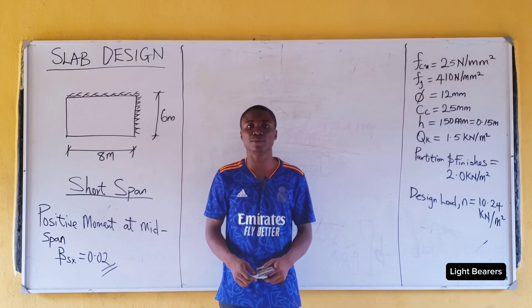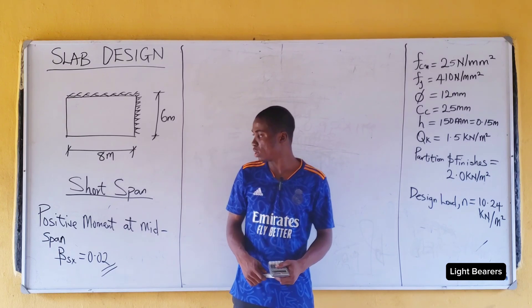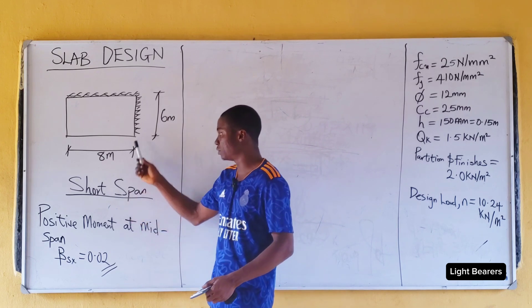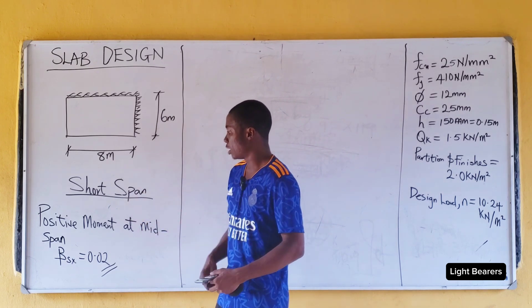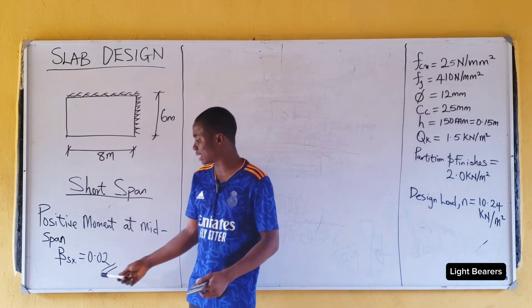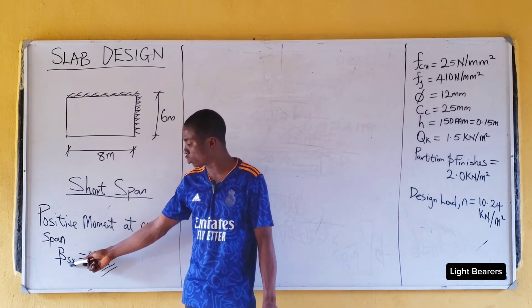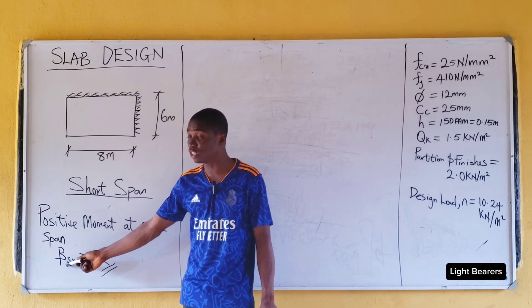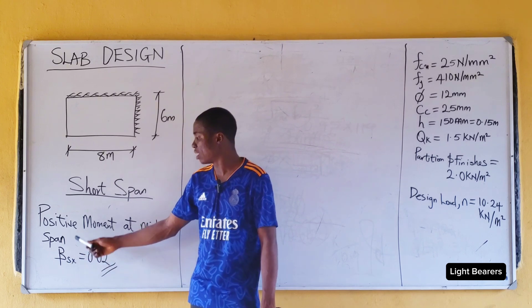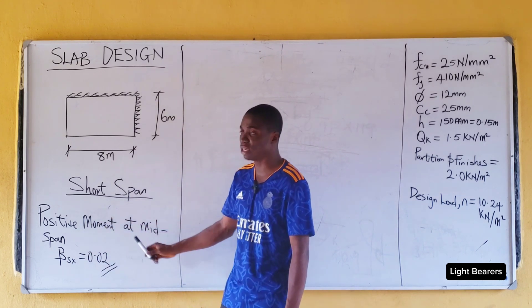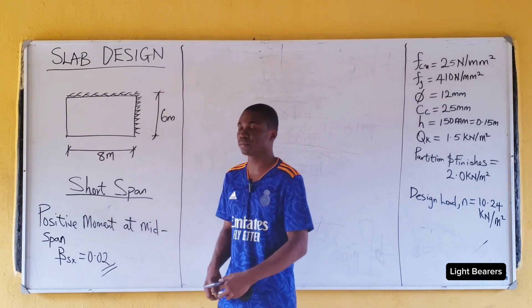Hello, and welcome to Light Bearers. Today we will calculate for the short span of the slab. Remember, in our last class I taught us how to get the moment coefficient, which is dsx, for positive moment at mid-span.